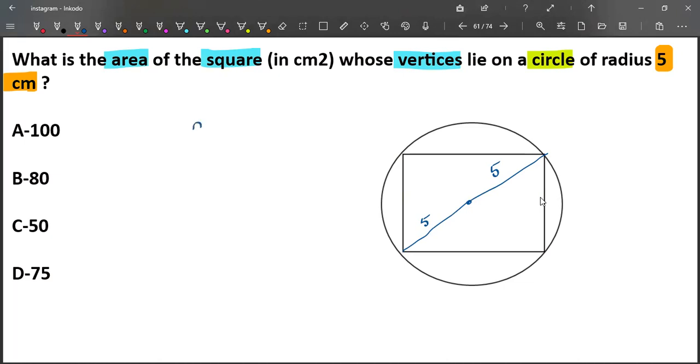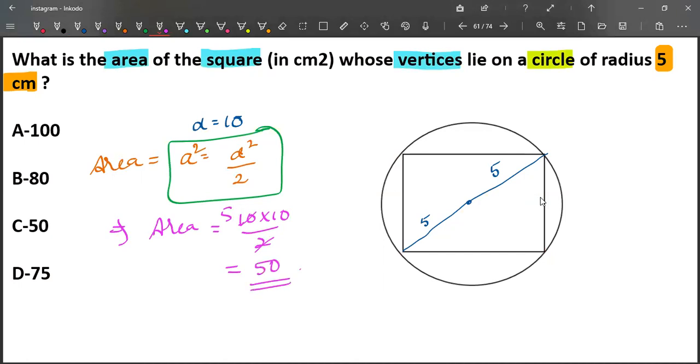How much is the diameter? d is equal to 5 plus 5, 10. When diameter is given, the area of square is equal to d square by 2. Area is equal to a square is equal to d square by 2. These 10, that implies area is equal to 10 into 10 by 2, which is 50. Our answer is option C.